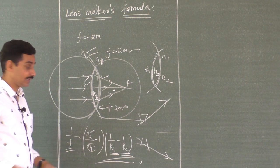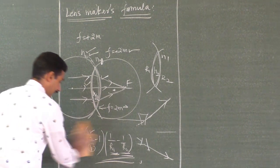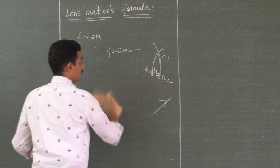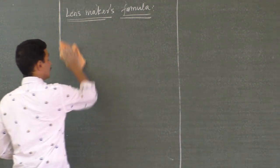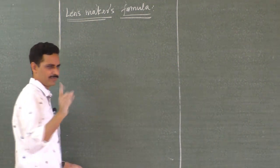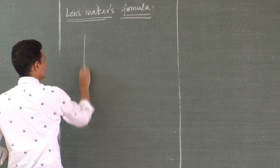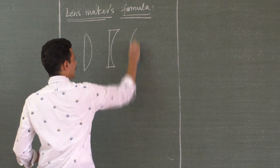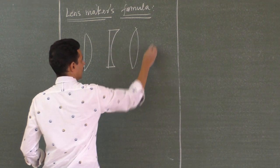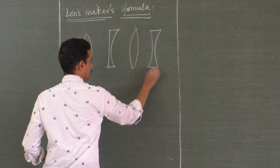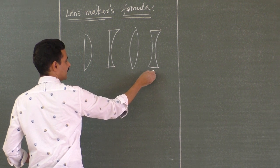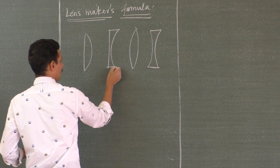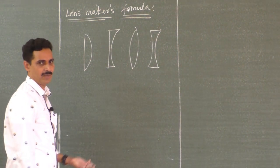A lens is an optical medium bounded by two surfaces, and either both or at least one surface is curved. This is planoconvex, this is planoconcave, biconvex, and biconcave — double convex, double concave, planoconcave, planoconvex. You can have any type of lens.